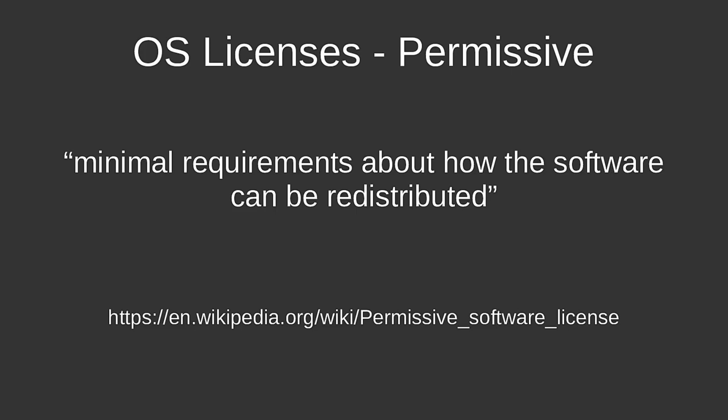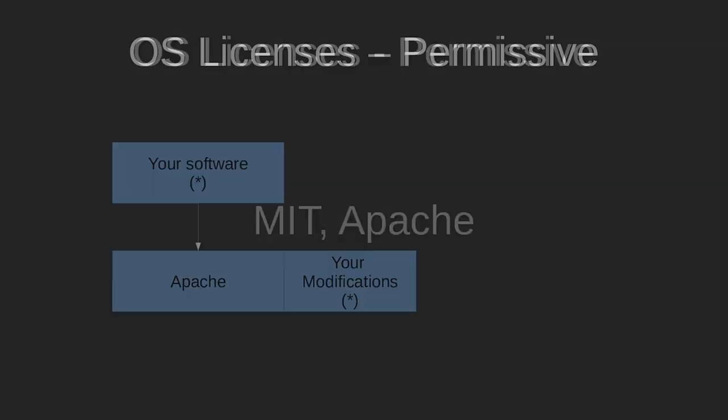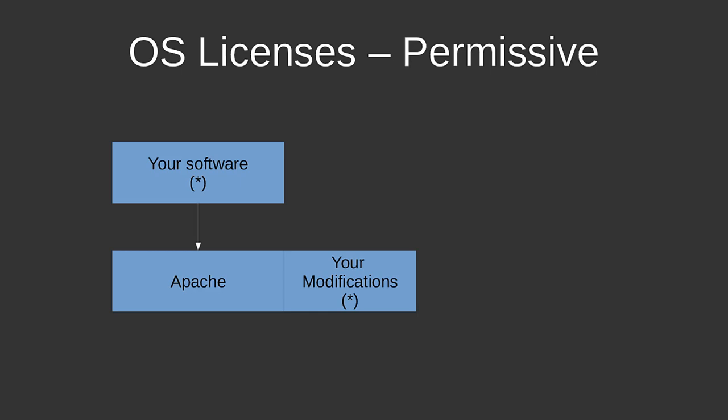The class of permissive licenses sets minimum requirements about how the software can be redistributed. It sets very few restrictions or obligations on you. Two classic examples are MIT and Apache. If you use some Apache-licensed software and modify it, your modifications can be under any license. And the software using the Apache-licensed software can itself be under any license. So it depends on the license — which other licenses it is compatible with.